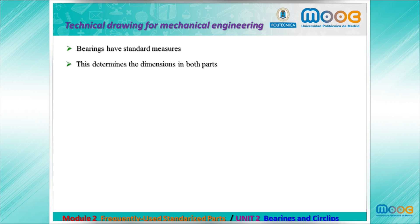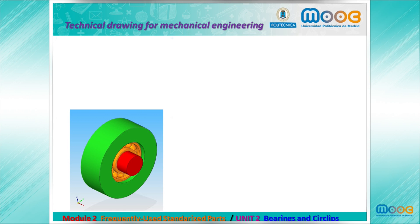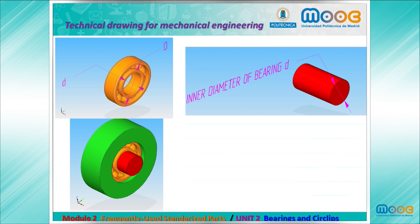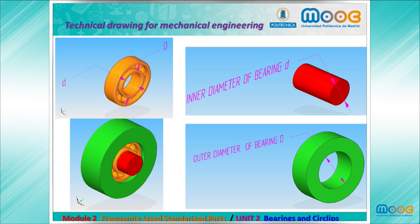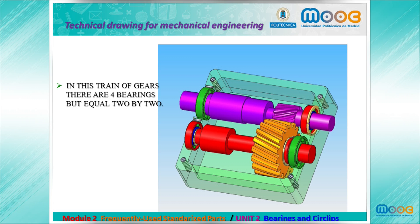Bearings have standard measures, which determines the dimensions in both parts: in the hub and in the shaft. Here we have the dimensions — the diameter of the inner ring and the diameter of the outer ring. The inner diameter will be the diameter for the shaft, and the outer diameter of the bearing will be the diameter of the bore in the hub. In this train of gears we have four bearings, which are equal two by two.